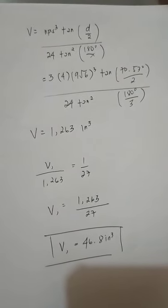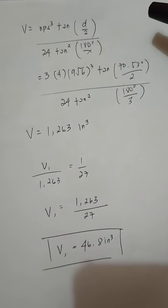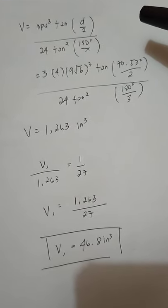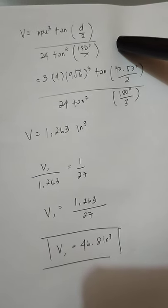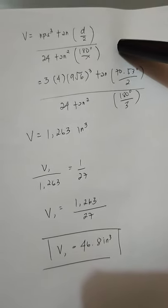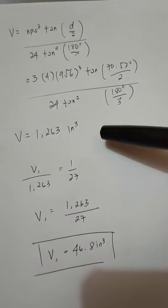Now, we can get the volume of the original tetrahedron as discussed in our topic. V is N times B times S cubed times tangent of D over 2 divided by tangent squared of 180 over N.